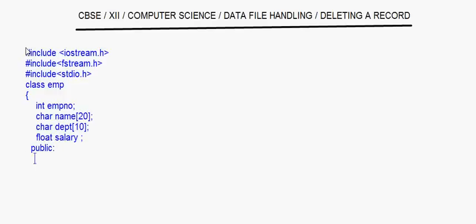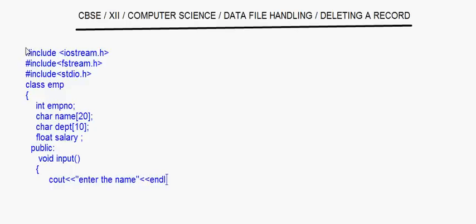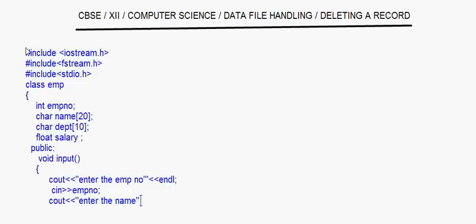In the public declaration we have void getData, which I call void input. Here you have statements like: cout 'enter the employee number', then cin EMP_number, then cout 'enter the name', and cin name.